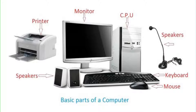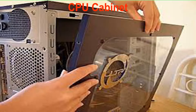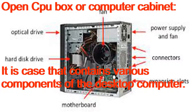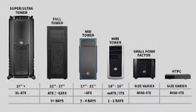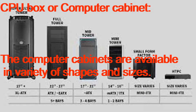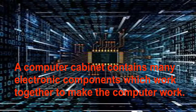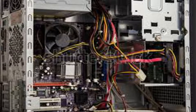Each of these parts performs a special function for the computer. As these parts have become part of your vocabulary, you will never forget their names. But these are not all in all — a computer has many more parts. To find more parts, you have to open your CPU box. The CPU box or the computer cabinet is the case that contains various components of the desktop computer. Computer cabinets are available in a variety of shapes and sizes, and their size varies depending on the type and power of the computer. A computer cabinet contains many electronic components which work together to make the computer work. Some components are hidden inside the cabinet while others are partly visible. Some of the components of the CPU cabinet are explained in this chapter.